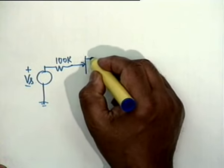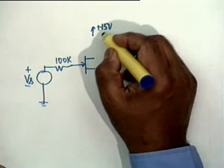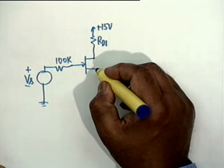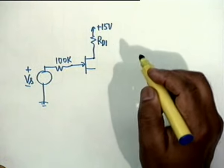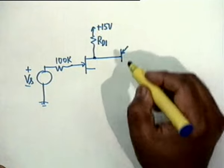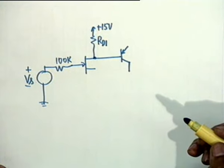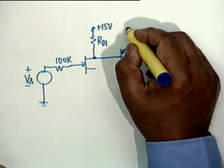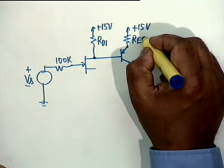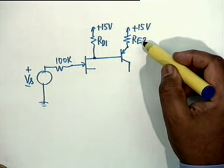We have a source Vs. The source resistance is 100k. To bring variety into experience, we have a FET. The FET goes to plus 15 volts and the resistance is RD1. The output of this is directly coupled to a BJT — it is an FET-BJT combination. The BJT is PNP and the supply is the same, 15 volt. There is a resistance RE2.